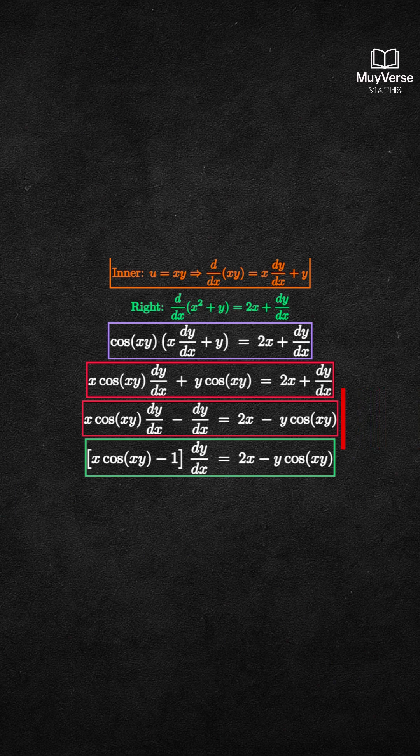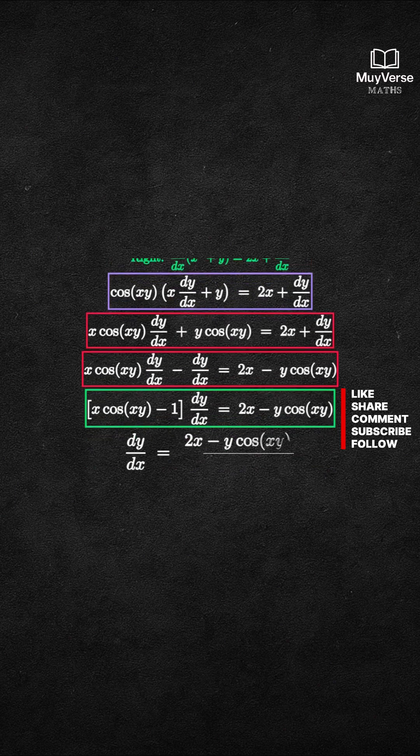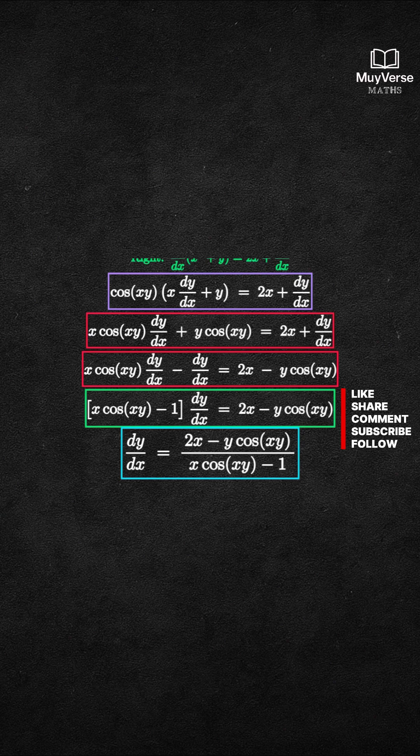Step 3: Solve for dy/dx by dividing both sides by the bracket term. dy/dx equals the fraction 2x minus y times cosine of xy over x times cosine of xy minus 1. That is our result.